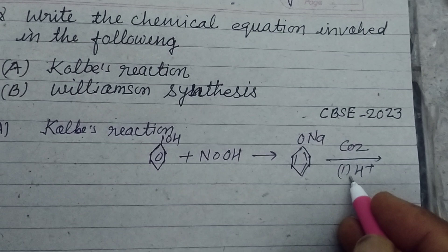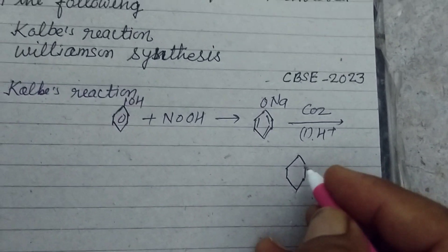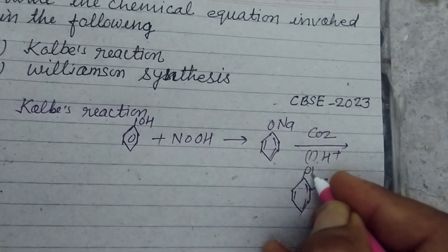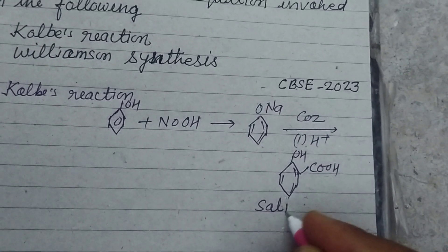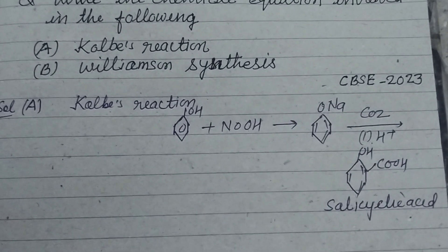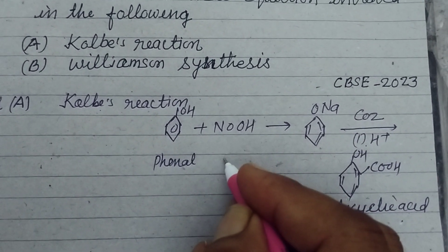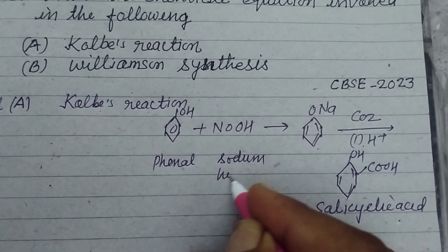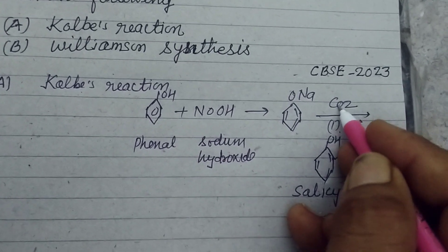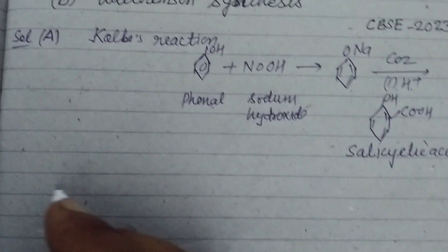Now this sodium phenoxide is treated with carbon dioxide under pressure, then treated with sulphuric acid — it gives salicylic acid. So this is the Kolbe reaction: phenol reacts with NaOH (sodium hydroxide), giving sodium phenoxide, and treating with carbon dioxide and sulphuric acid gives salicylic acid.